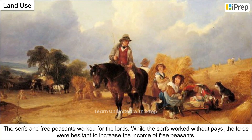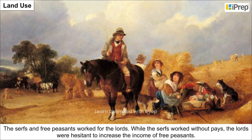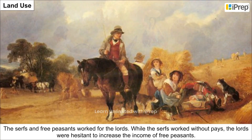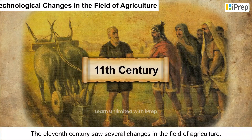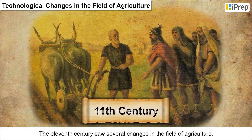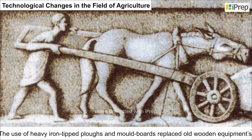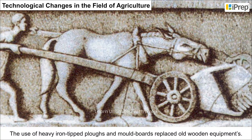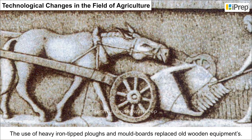The lords were hesitant to increase the income of free peasants. The 11th century saw several changes in the field of agriculture. The use of heavy iron-tipped plows and mold boards replaced old wooden equipment.